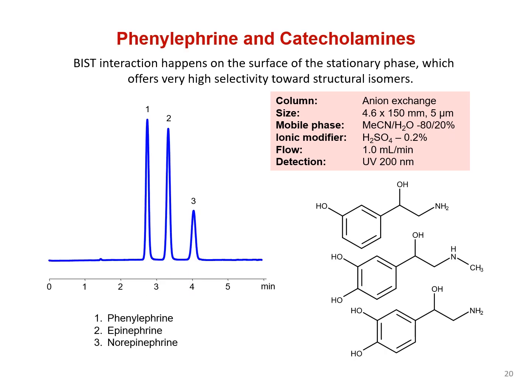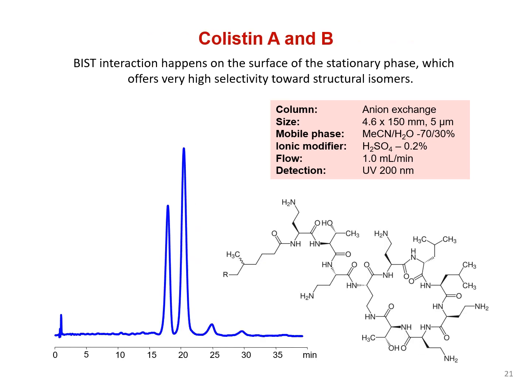Here's another example of separating similarly structured compounds, this time catecholamines. This also allows for high selectivity to be achieved in the separation of structurally similar isomers of colistin.